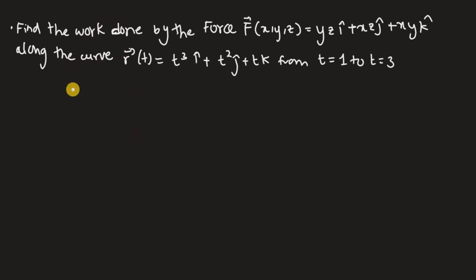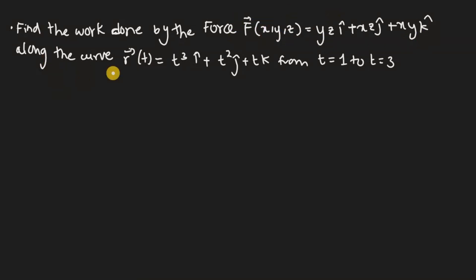Hi guys, welcome back to my channel. In this video I'm going to go over section 9.8, which is to find the work done by the force along the curve. I have a question and I'm going to solve it. It says find the work done by the force — the function given — along the curve, which is the vector function t cubed i hat plus t squared j hat plus t k hat, from t equals 1 to t equals 3.